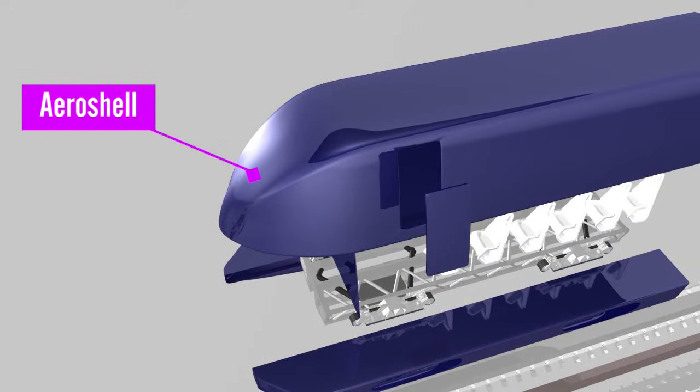The aeroshell is made of carbon fiber panels and is used to test the wide variety of interactions within the pod structure. Carbon fiber is lightweight and stronger than steel.